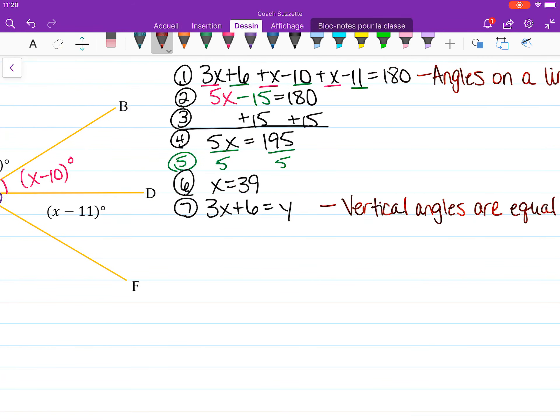OK. Then we know how much x is. It's 39. So then we have 3 times 39 is 117 plus 6 is equal to y. So 117 plus 6 is 123. Y equals 123 degrees,